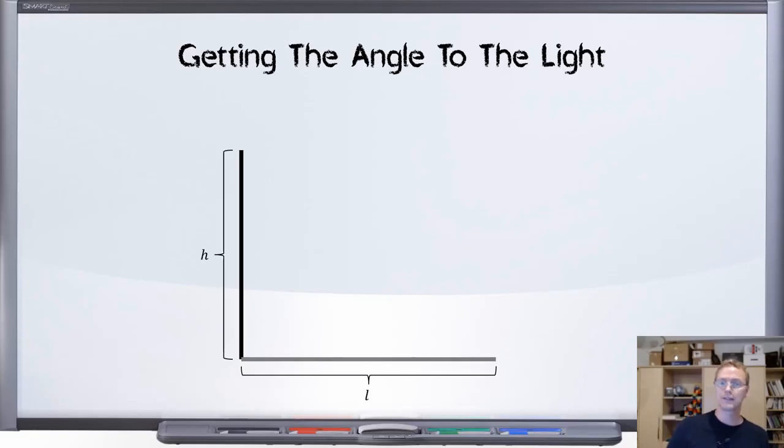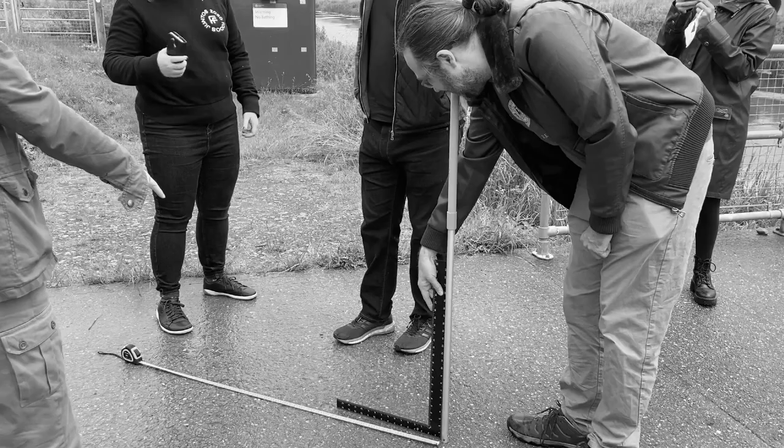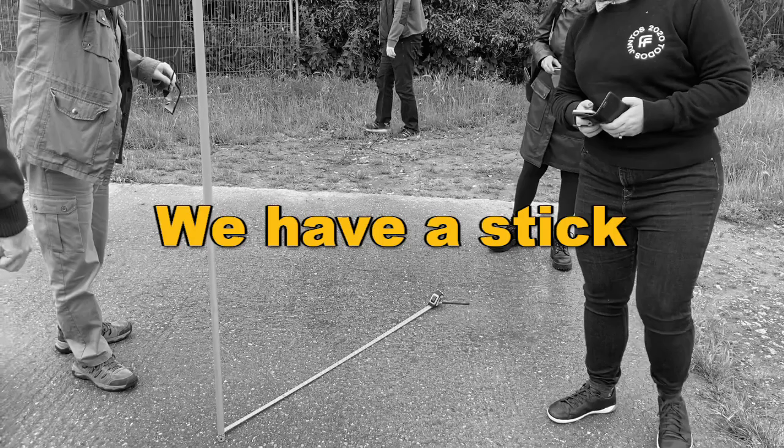From that, we're going to get the angle to the sun. That's the sun that's casting that shadow, so the angle to the sun can be gotten by simply measuring your stick and measuring the length of the shadow.